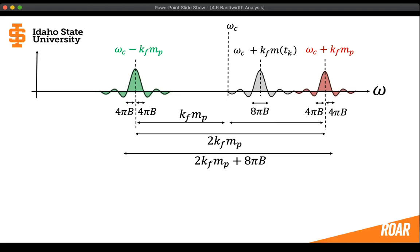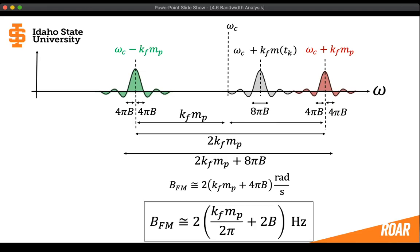Don't forget that the sinc pulse is spread out. Because of that rectangular box in time, it gets spread out in frequency. That spread in frequency means the main part of the sinc pulse adds an extra 4π b at the bottom frequency and an extra 4π b at the top frequency, for a total of 8π times the bandwidth of the original message. So now we've finally arrived at a bandwidth approximation for this entire wideband frequency modulated signal approximated by the staircase message — given as 2 times kf times mp plus 4π b in radians.